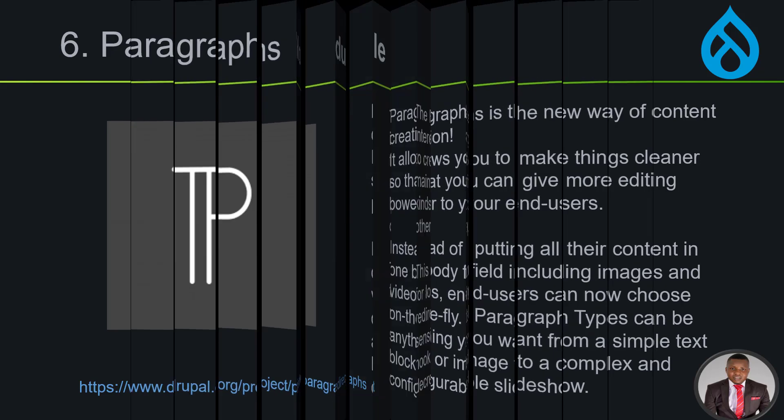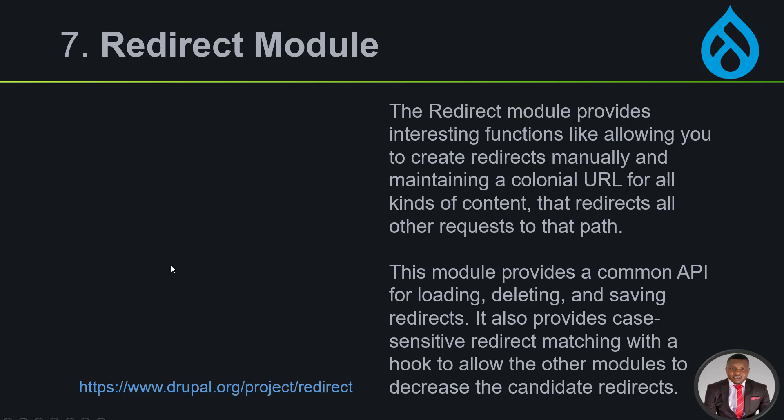Number seven is the Redirect module. This module provides interesting functions like allowing you to create redirects manually and maintaining canonical URLs for all kinds of content. It provides a common API for loading, deleting, and saving redirects, and also provides case-sensitive redirect matching. For SEO, instead of saying URL A, you can point to the main URL as B for search engines. It keeps track of all the redirects.